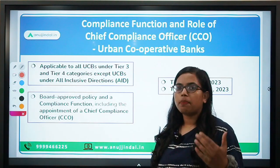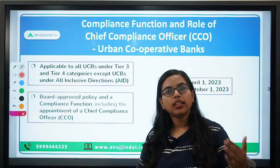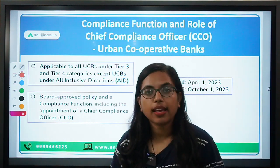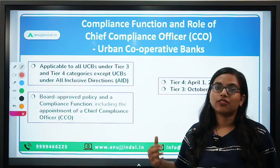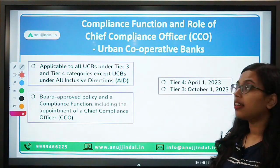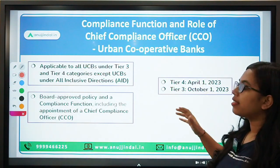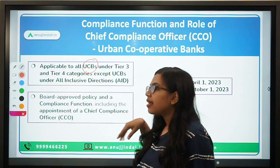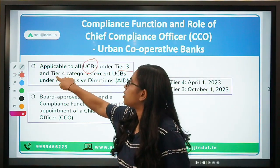RBI in the past has also issued certain compliance functions for other kinds of banks, such as District Central Cooperative Banks. Now this time, it has brought these guidelines for the Urban Cooperative Banks. All of these guidelines from RBI will be applicable to the Urban Cooperative Banks that come under the Tier 3 and Tier 4 categorization.